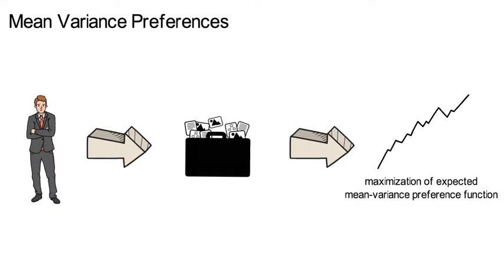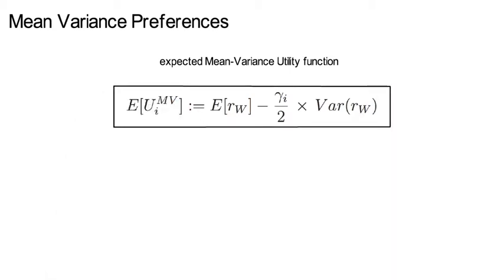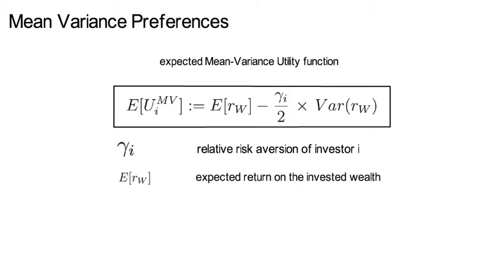As u'' is a positive monotone transform of the input and u'' is a measure for the investor's risk aversion, the expected mean variance utility function can be simplified to the following expression. Where gamma i is the relative risk aversion of investor i, the expectation of rw is the expected return on the invested wealth and the variance of rw is the respective return variance.